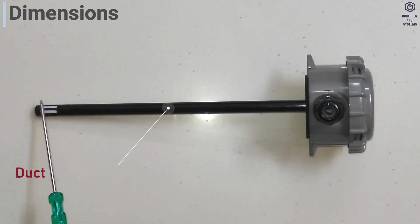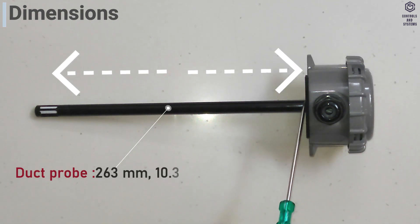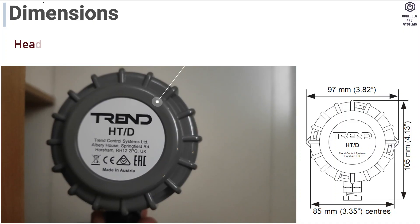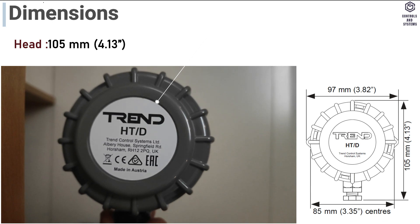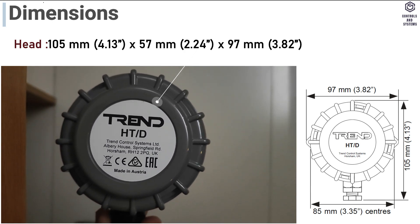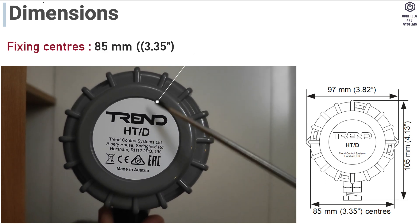Dimensions: Duct Probe Length 263 mm including filter, Diameter is 12 mm. Head: 105 mm, 57 mm, 97 mm. Fixing Centres: 85 mm.